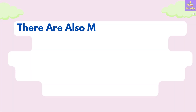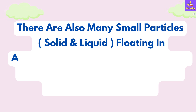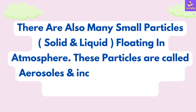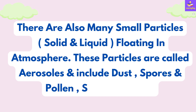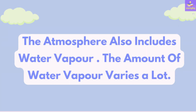There are also many small particles, solid and liquid, floating in the atmosphere. These particles are called aerosols and include dust, spores, pollen, smoke, and more. The atmosphere also includes water vapour, and the amount of water vapour varies a lot.